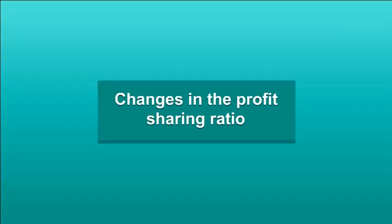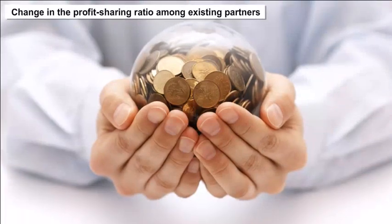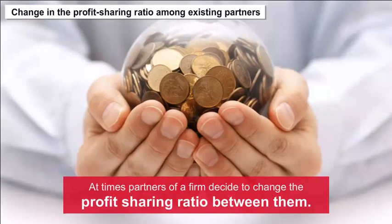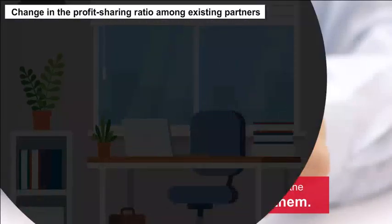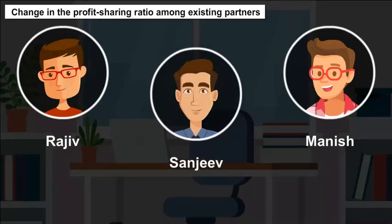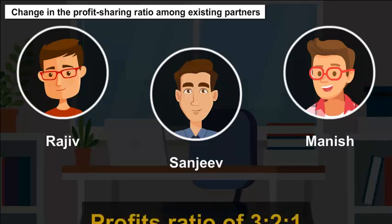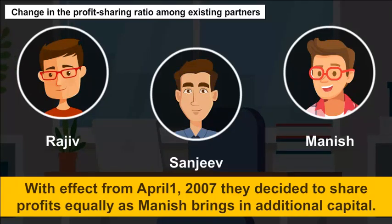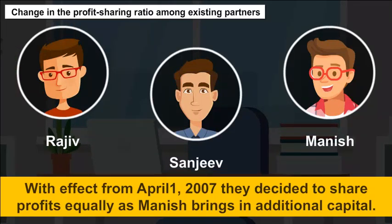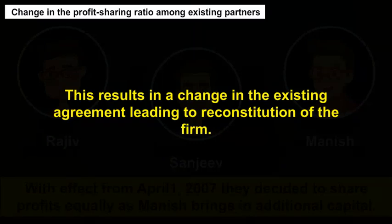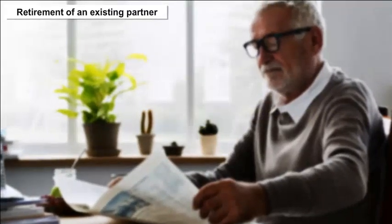Changes in the profit sharing ratio among existing partners: At times, partners of a firm decide to change the profit sharing ratio between them. For example, Rajiv, Sanjeev and Manish are partners sharing profits in the ratio of 3:2:1. With effect from April 1, 2007, they decide to share profits equally as Manish brings in additional capital. This results in a change in the existing agreement, leading to reconstitution of the firm.